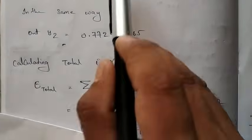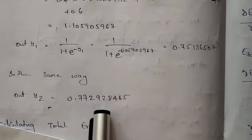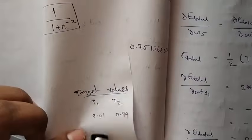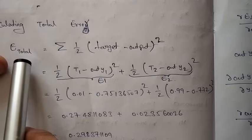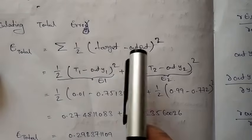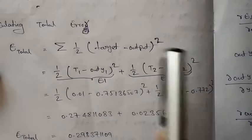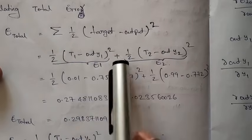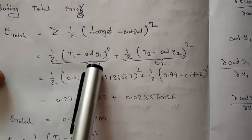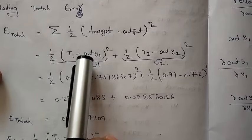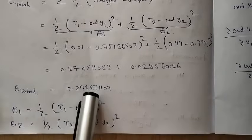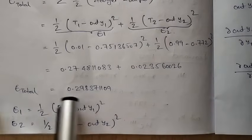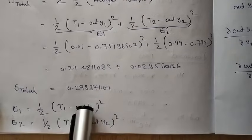Our target values are the given y1 and y2 values. These are not matching with what we got, so we calculate the error. The formula is: E_total = Σ (1/2) · (target - output)². That is: (1/2)·(T1 - output_y1)² + (1/2)·(T2 - output_y2)². The first part is E1 (error at y1) and the second is E2 (error at y2), because we got two output values. You can do the calculation and check — you will get the values of E1 and E2, and thus the total error E_total.